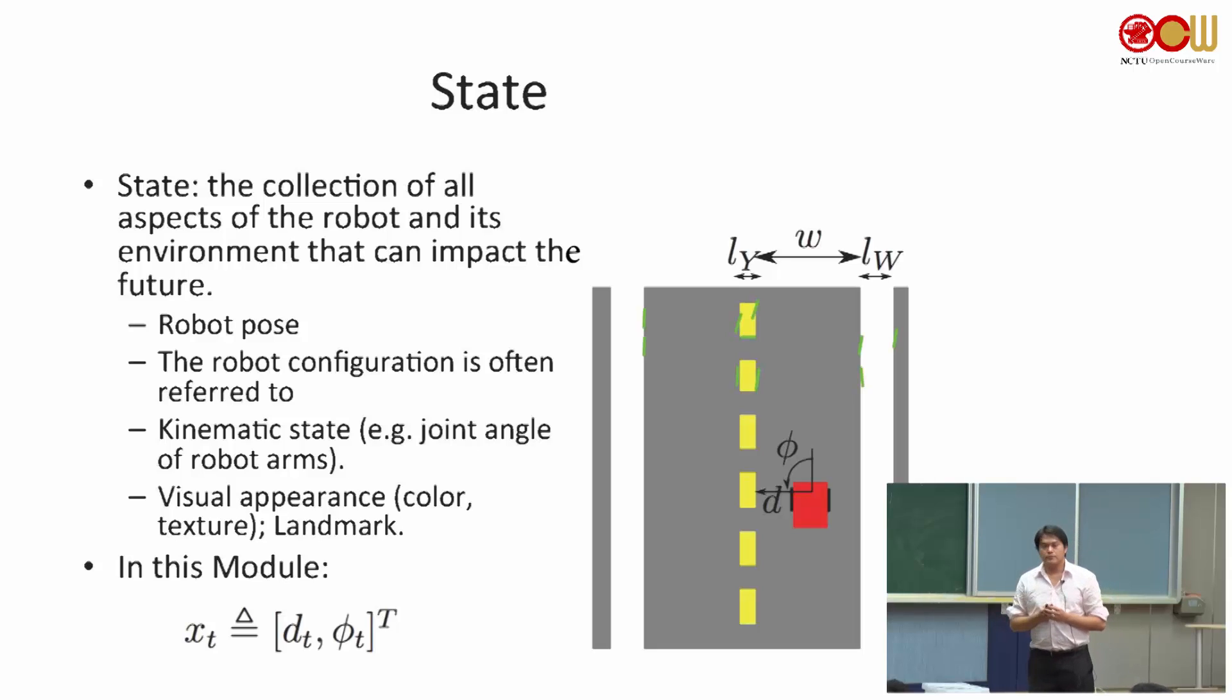And in this module, because this is a lane following task, we only care about, this is the car over here, we care about how far away we stay from the center of the lane and what's the heading direction of the robot. And also, this is the environment. So we have the width of the white lines, the width of the yellow lines, and we have the W. W is the width of the lane. We care about those parameters.